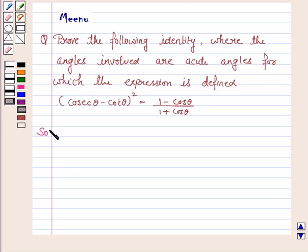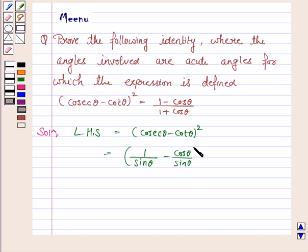Let's now move on to the solution and start with LHS. LHS is cosecant theta minus cot theta whole square. This can be written as 1 upon sin theta minus cos theta upon sin theta whole square, because cot theta is cos theta upon sin theta.